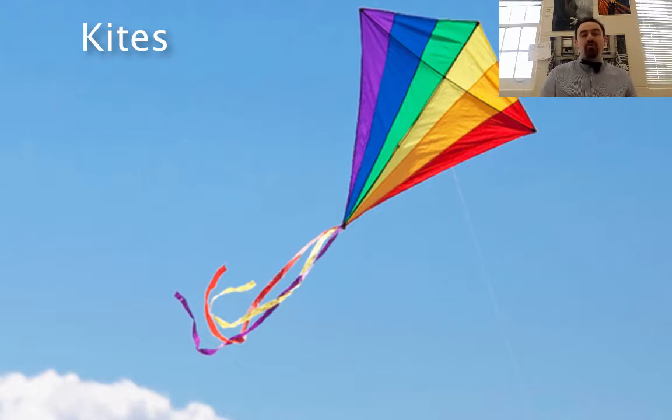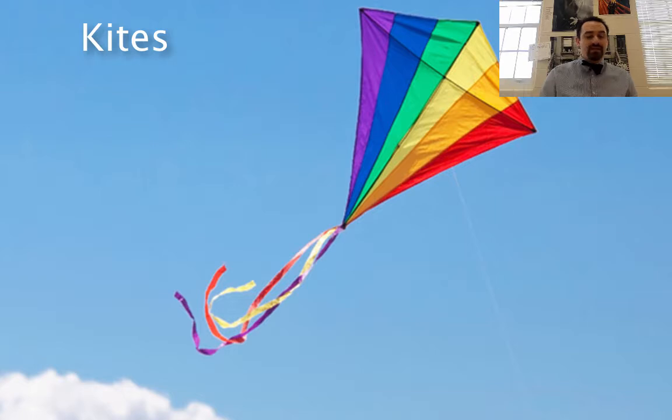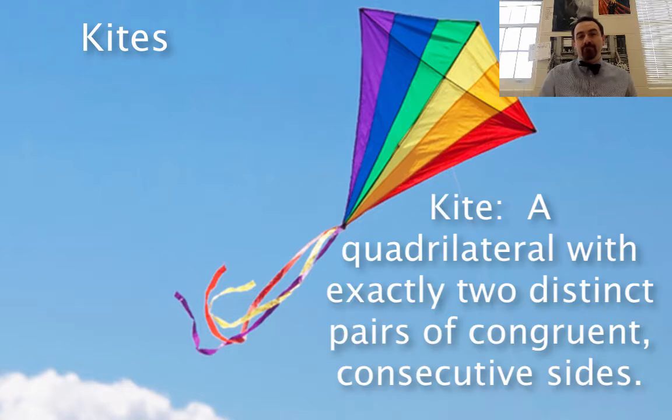A kite is a quadrilateral with exactly two distinct pairs of congruent consecutive sides.